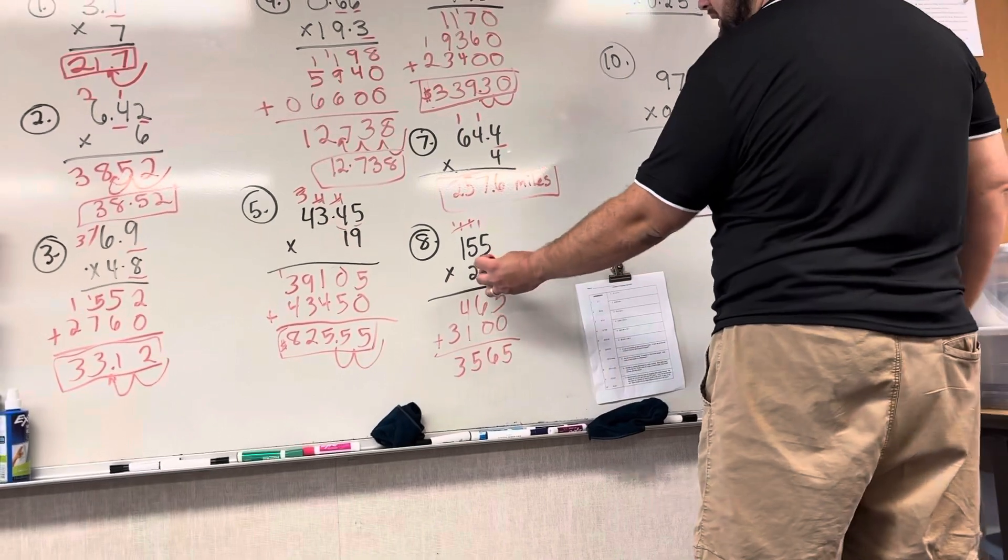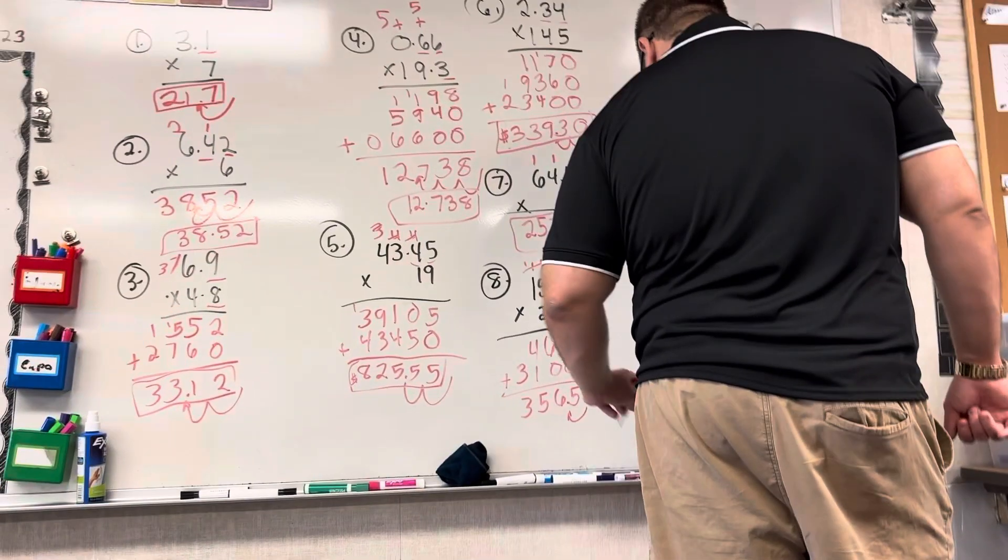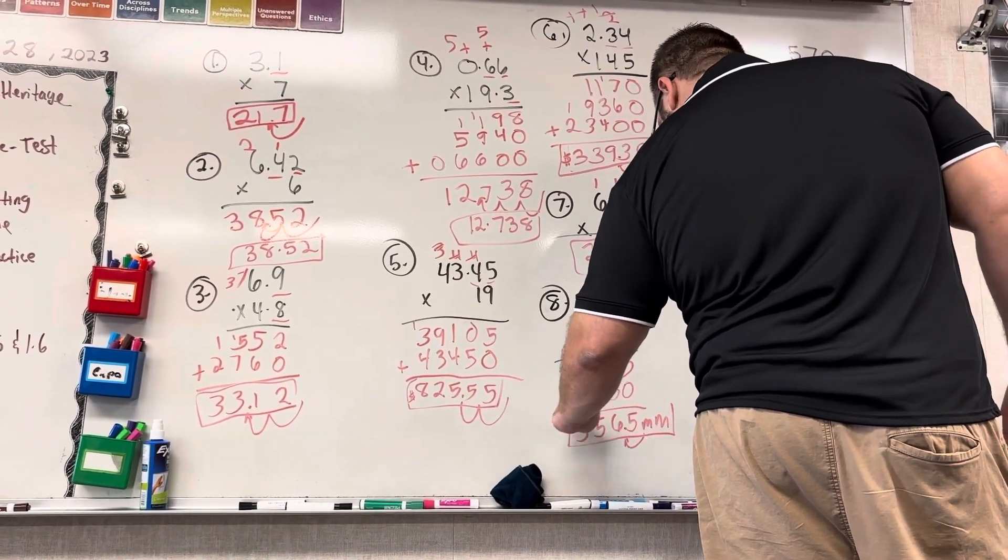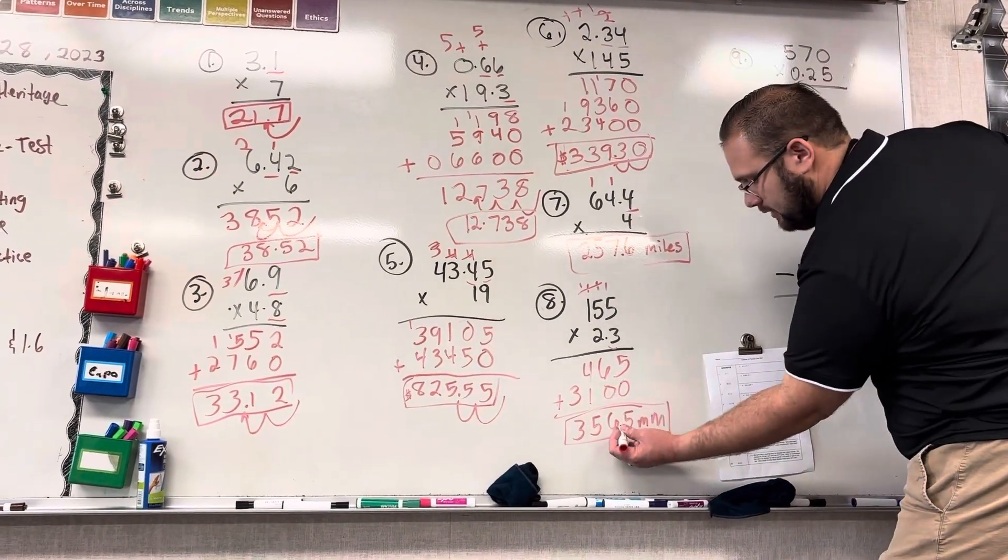And there is 1 behind the decimal here, so we're going to move it in one spot. So we have 356.5 millimeters. There's the point right here, I'll make it really nice and big.